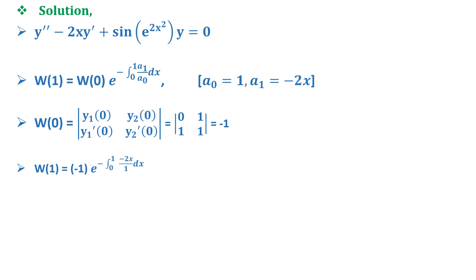Now substituting this value in W(1), it gives us W(1) = -1 × e^(-∫₀¹ -2x/1 dx), which is equal to -1 × e^(x²)|₀¹, which is equal to -e.